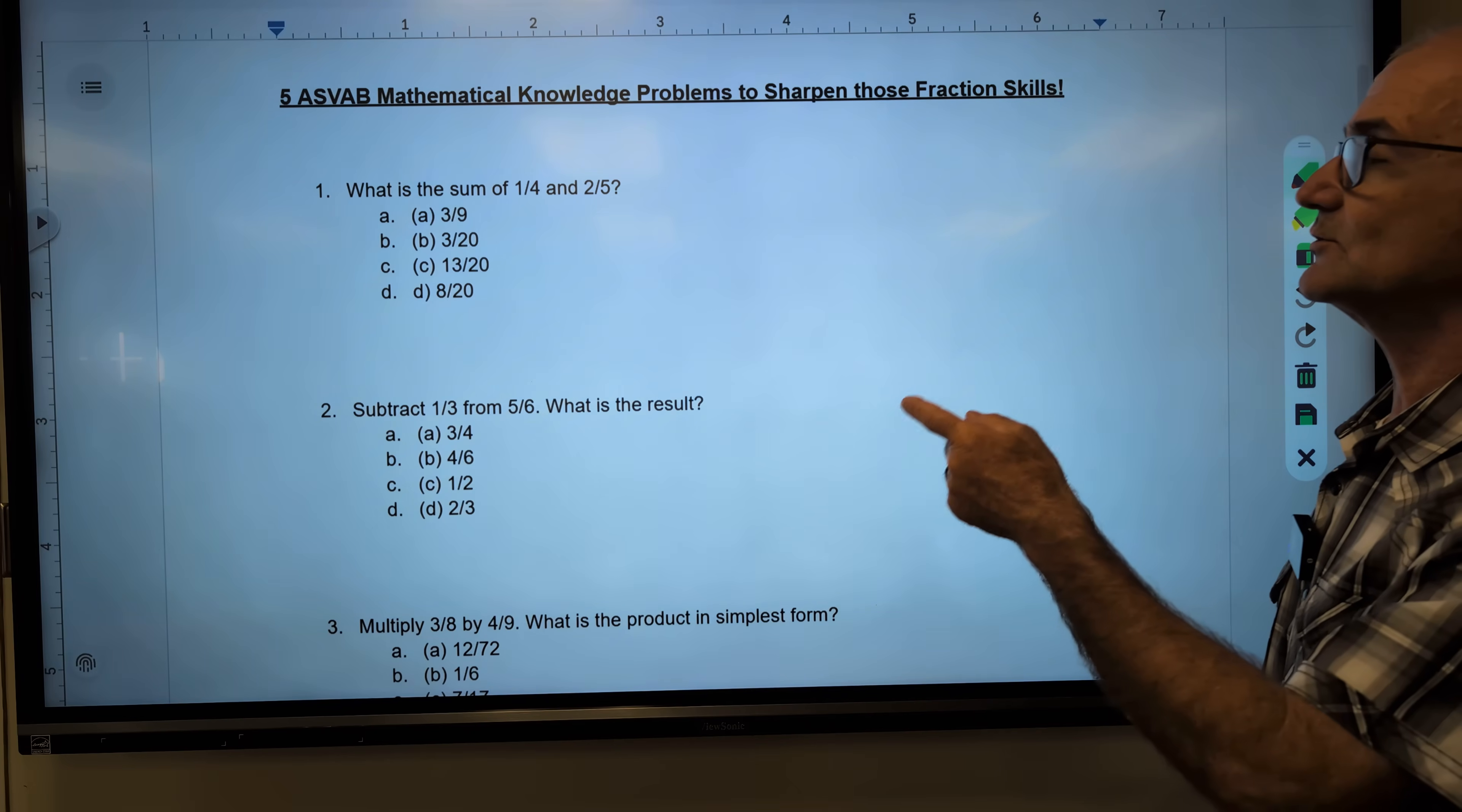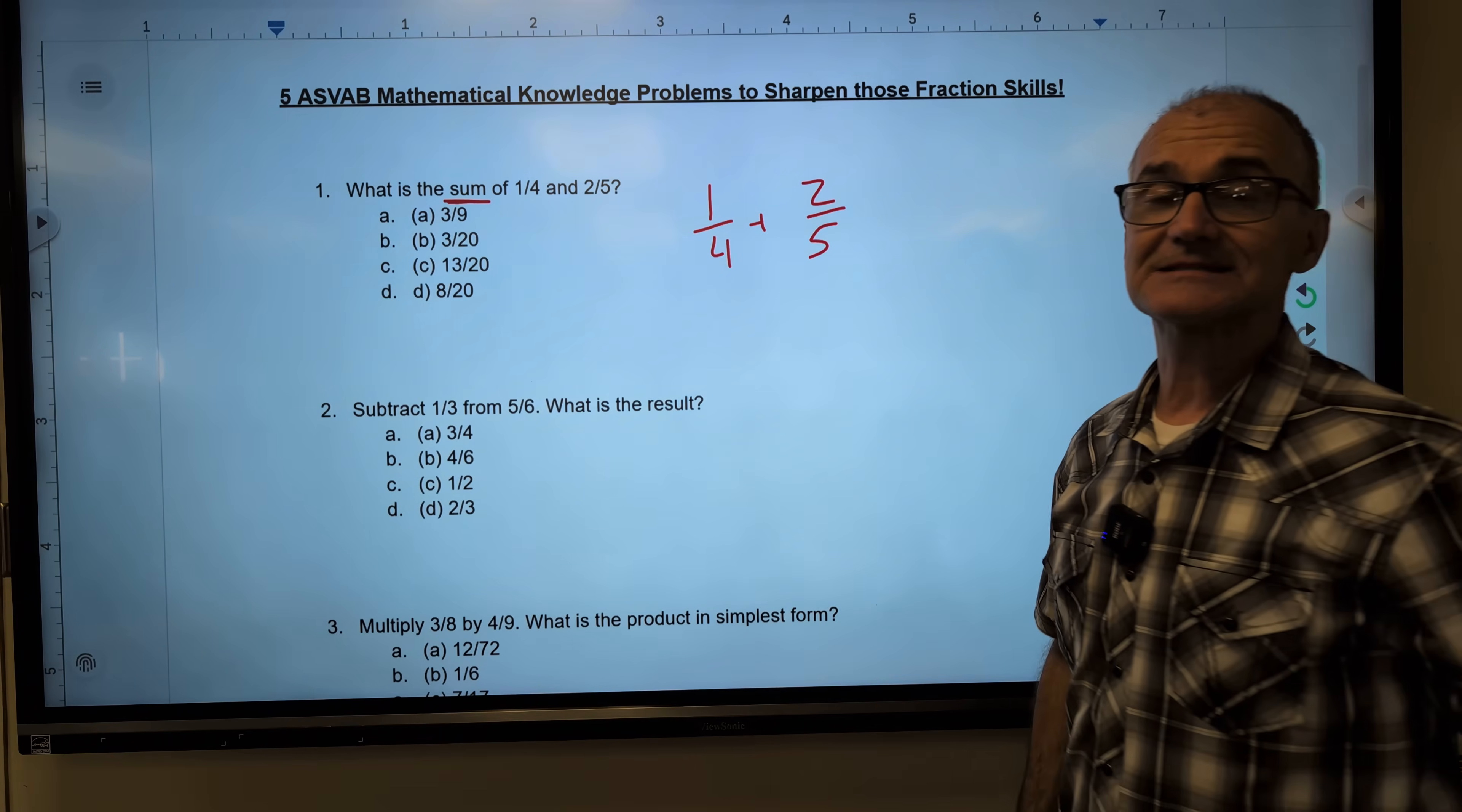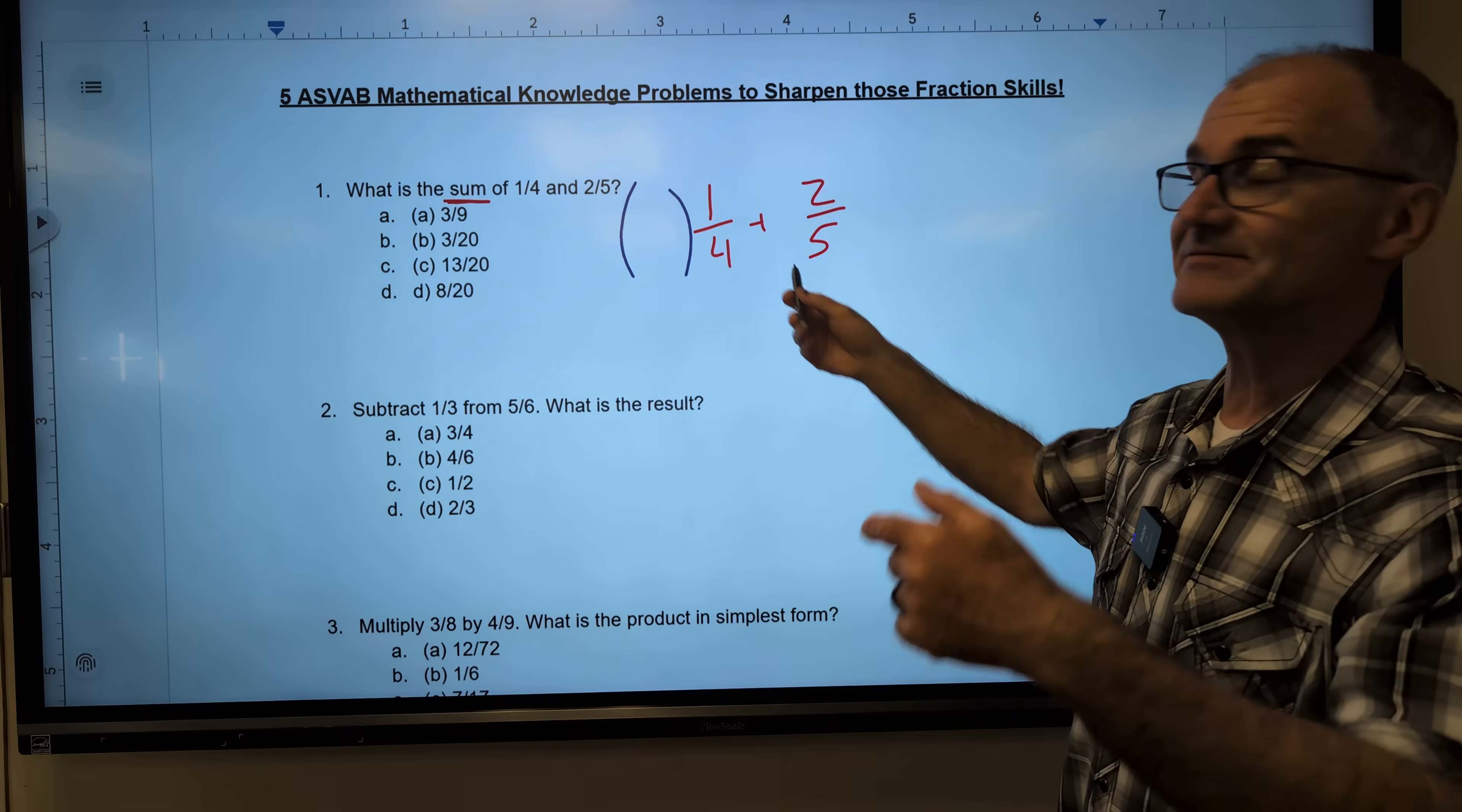What is the sum of one quarter and two fifths? A couple things here. First thing, you've got to decode this sentence. Sum means to add, so that means I have to add one quarter and two fifths. The rule for adding and subtracting fractions is that bottom number has to be the same. So I've got to convert these two fractions so that the bottom number is the same. The way I'm going to do that is I am going to multiply it by a factor of one so I don't change the value of it. So I'm looking for the least common multiple. What is the smallest number that four will go into? And five.